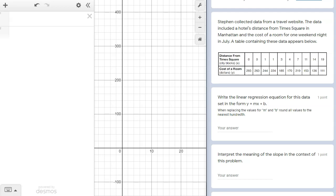If we look at our data table here, we see that the distance from Times Square is the x value and the cost of the room will be plotted on the y-axis.